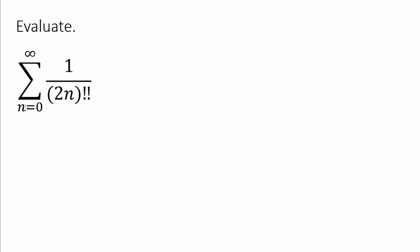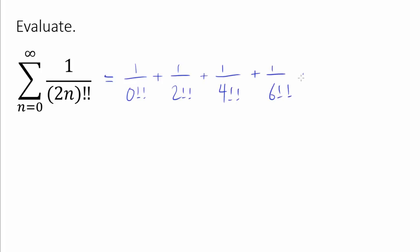Let's try evaluating the sum from n equals 0 to infinity of 1 over (2n) double factorial. We are evaluating 1 over 0 double factorial plus 1 over 2 double factorial plus 1 over 4 double factorial, 6 double factorial, and so on. I'm defining it the usual way such that 0 double factorial is 1.